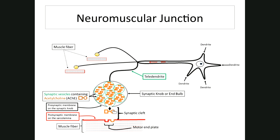For gross movements, a motor neuron may stimulate hundreds of muscle cells — that motor unit is quite large. Walking, for example, is not a fine movement; you contract the leg, swing it forward, push it down, and repeat. For really fine movements you stimulate fewer muscle cells, so your motor unit is small.